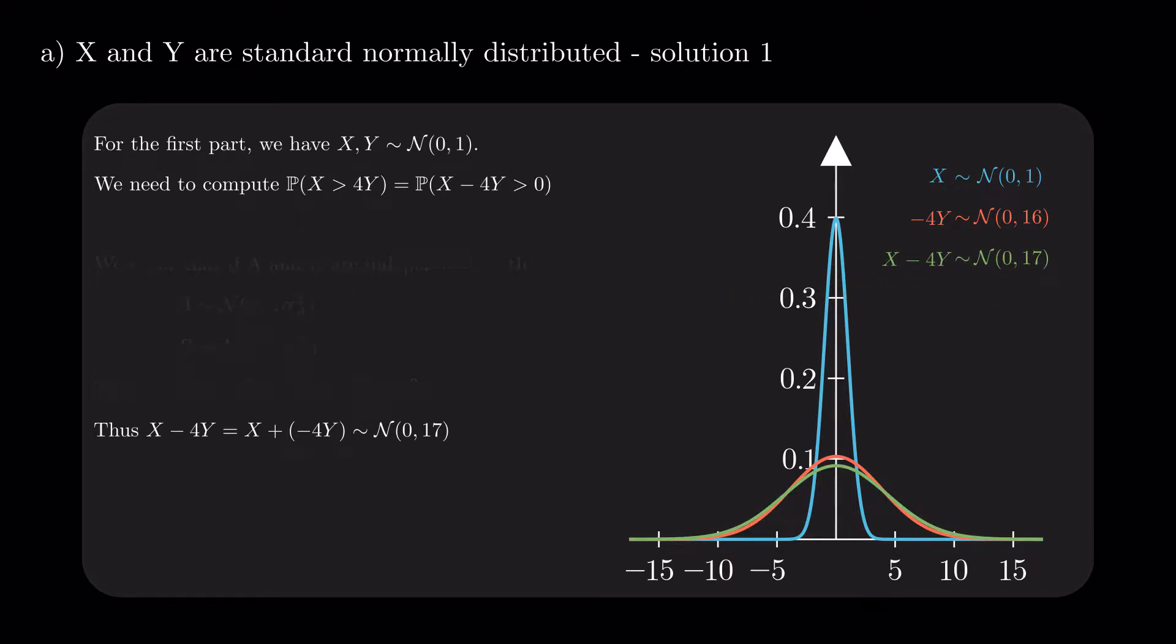We now know that X - 4Y is a normal distribution with mean 0. Due to the symmetry around the mean of a normal distribution, we conclude that the probability that X is greater than 4Y is 1/2.